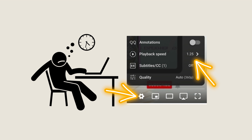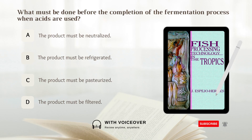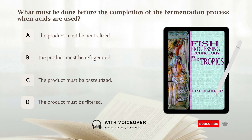Choose the best answer. What must be done before the completion of the fermentation process when acids are used? A) The product must be neutralized. B) The product must be refrigerated. C) The product must be pasteurized. D) The product must be filtered.